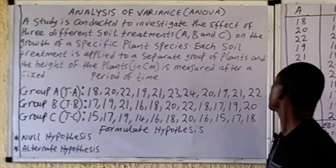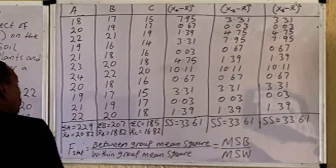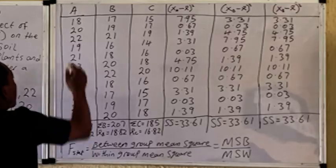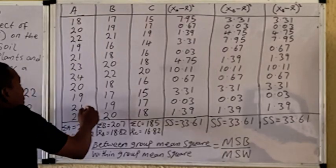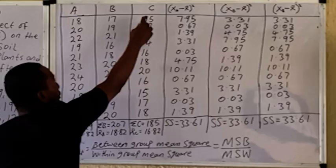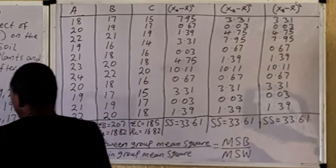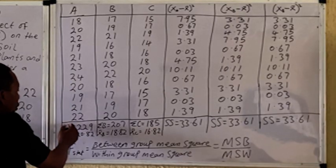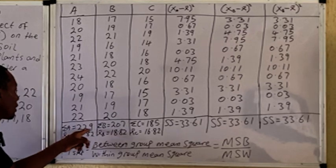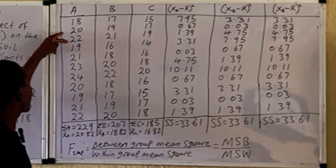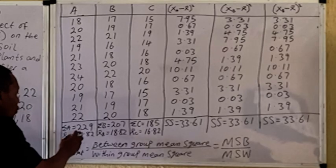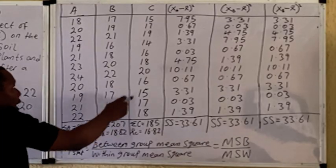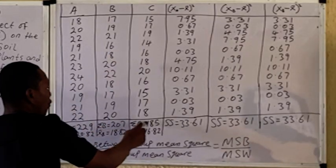Once you have formulated your hypothesis, the next step is to put together your table before applying the formula. Write down the values for A, B, and C as given in the question. Then look for the sum of A, which is 229; the sum of B, which is 207; and the sum of C, which is 185.